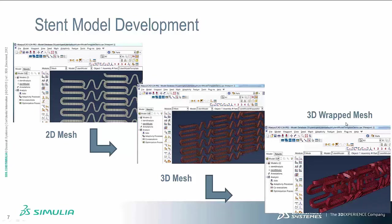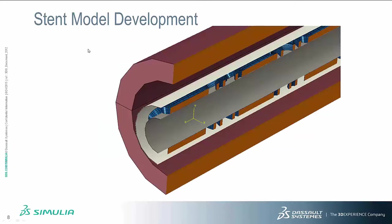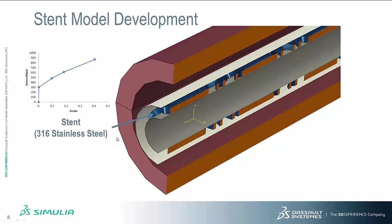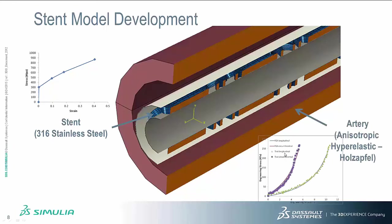Once we have the 3D mesh, we can proceed with setting up the model analysis. The stent itself was modeled using stainless steel, as shown in the stress-strain graph on the left. The artery is a solid cylinder modeled using an isotropic hyperelastic Holzapfel material. On the bottom graph, you can see the stress-strain curve, and the material properties used match well with the experimental test data for the artery material properties.